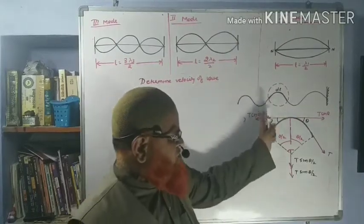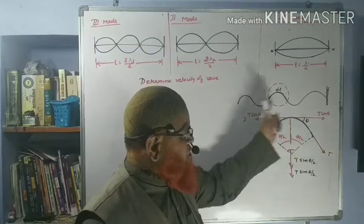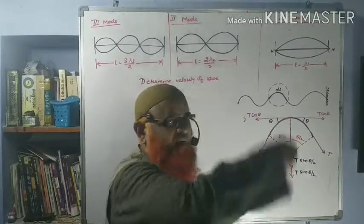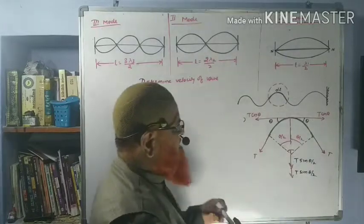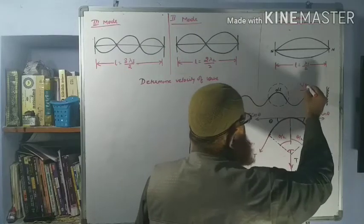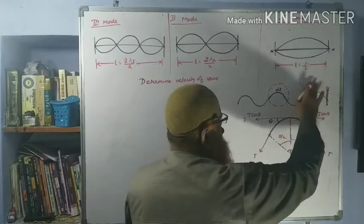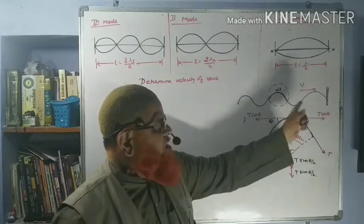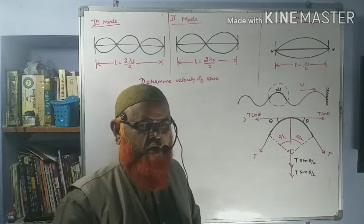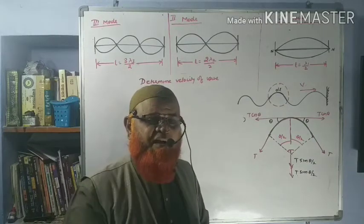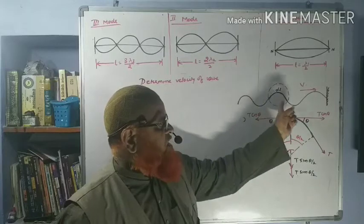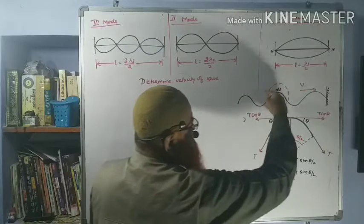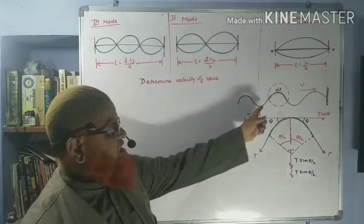When you take a rope, this rope is fixed to the rigid support at the right side. From this end you are shaking the rope up and down, and loops are forming here. These loops move forward with a speed V. So how can you determine the speed of the wave in a stretched string?